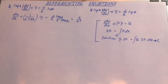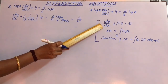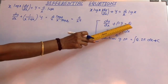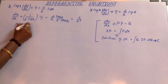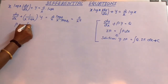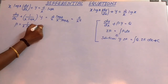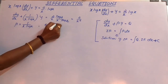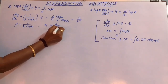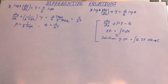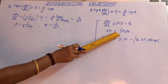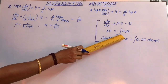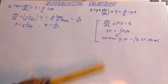Now this equation is in the standard form dy/dx + Py = Q, where P = 1/(x·log(x)) and Q = 2/x². Now let us find the integrating factor, which equals e to the power of the integral of P dx.